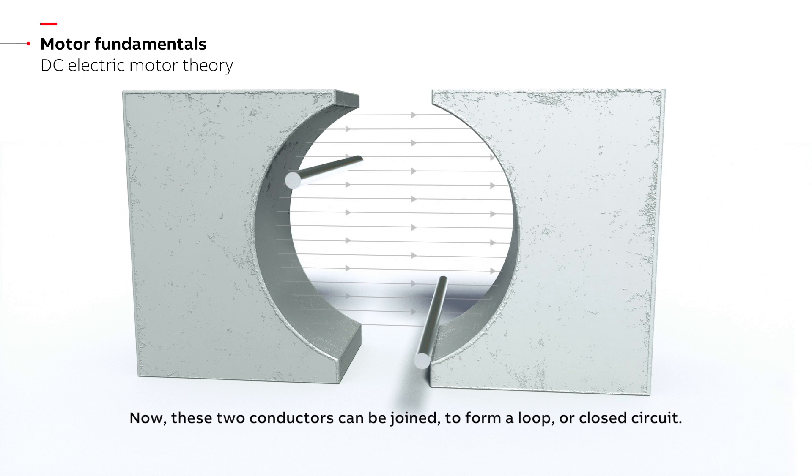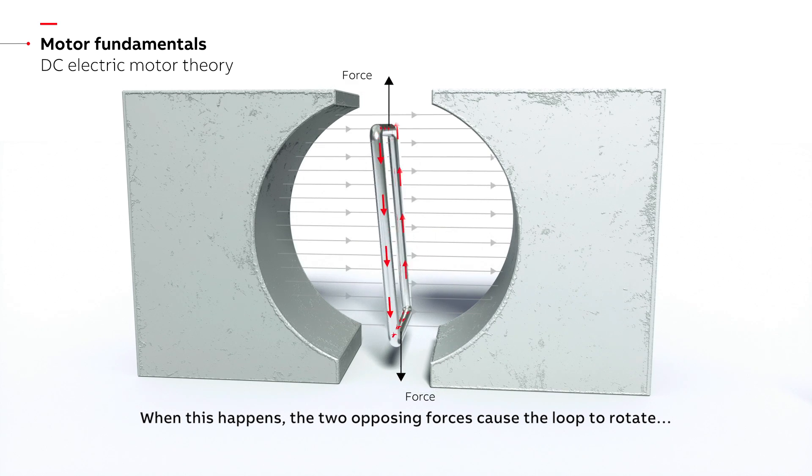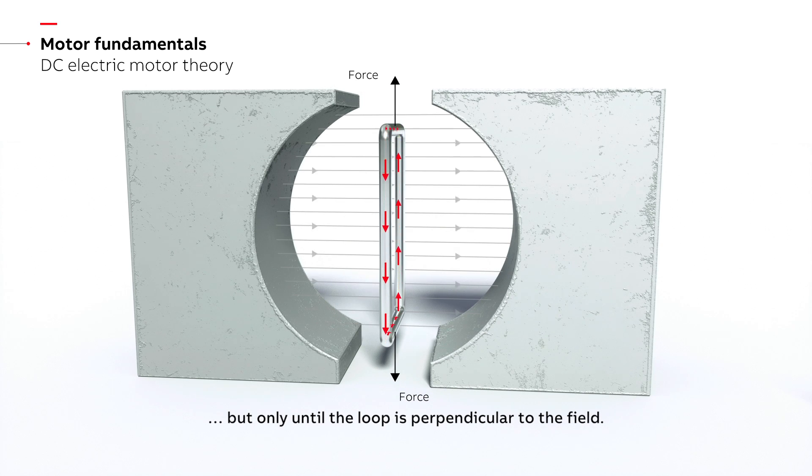Now, these two conductors can be joined to form a loop or closed circuit. When this happens, the two opposing forces cause the loop to rotate, but only until the loop is perpendicular to the field.